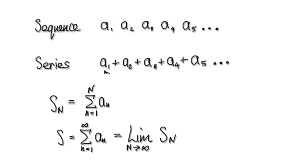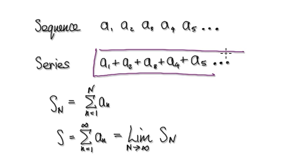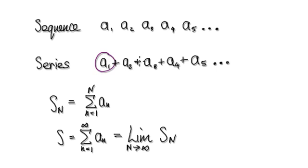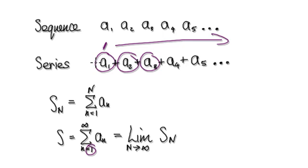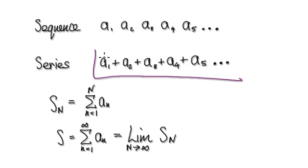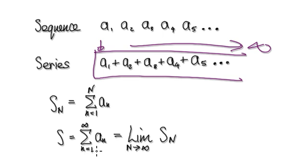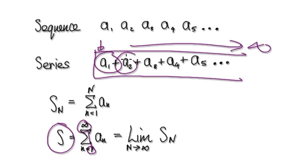With series, you're actually summing up all the terms. So if you're summing up all the terms from 1 all the way to infinity, we would denote capital S to represent the sum of everything — the sum of all the terms.